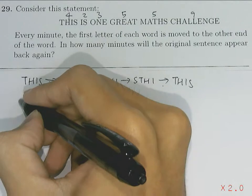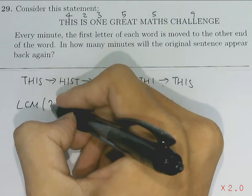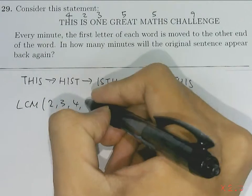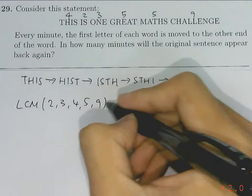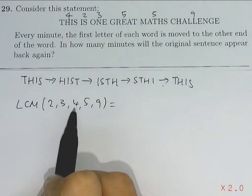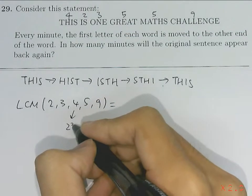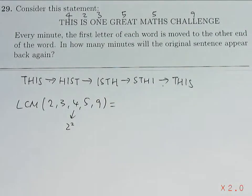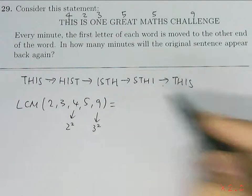So to find the LCM, which is the lowest common multiple of 2, 3, 4, 5, and 9. What we can do is find out the prime factors of all these numbers. 4 we know can split up into 2 squared or 2 times 2. While 9 can be split up into 3 squared or 3 times 3.